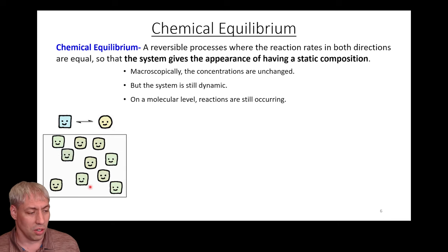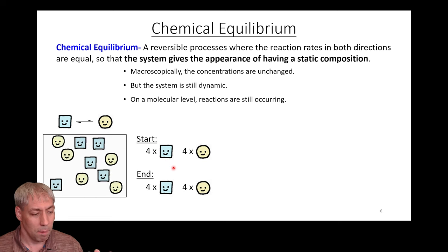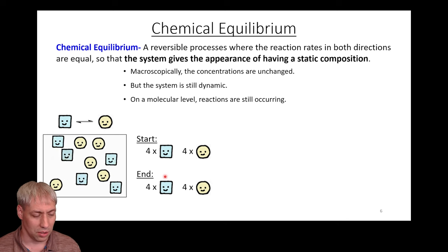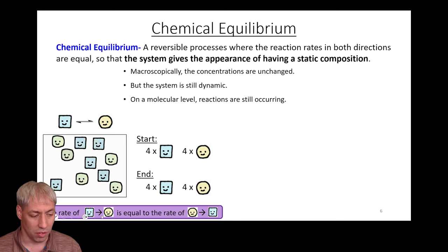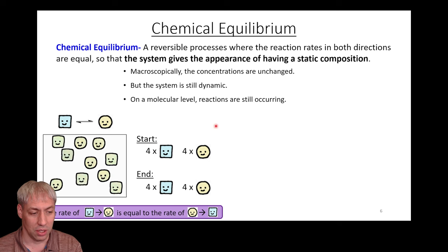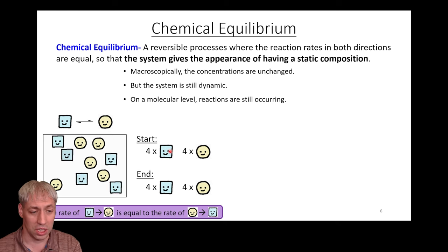Here's a cartoonish depiction: we have a square in equilibrium with a circle and they're transforming into each other. The take-home message is that any time you measure the system at equilibrium, you will have four squares and four circles on average — there might be moments where it's five and three, but on average you get four of each. The reason is that the rate of squares turning to circles equals the rate of circles turning to squares. If all the squares turned into circles, the rate of the reverse process would increase until they matched again.